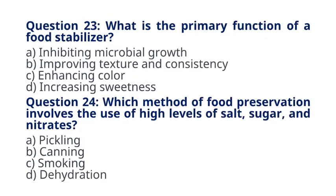Question 23. What is the primary function of a food stabilizer? A. Inhibiting microbial growth. B. Improving texture and consistency. C. Enhancing color. D. Increasing sweetness. The correct answer to question 23 is option B. Improving texture and consistency.